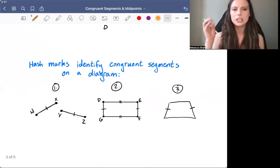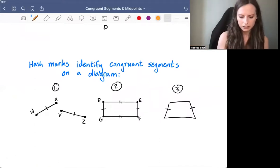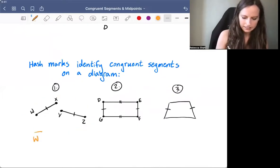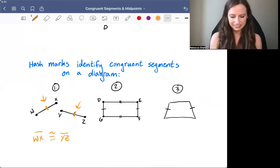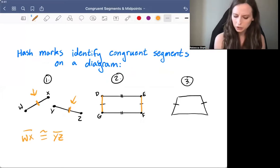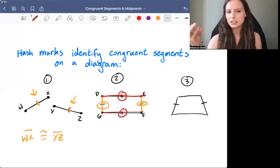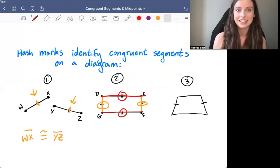Now, in a diagram, we show that two segments are congruent using these little hash marks. On number one, we can see that segment WX is congruent to segment YZ because they both have these little hash marks on each segment. Look at this next one. We have segment DG and EF. Both of those just have one hash mark, whereas these other two segments have two hash marks. So if a segment has a certain number of hash marks, then any other segment in the diagram with the same number of hash marks is congruent to that segment.